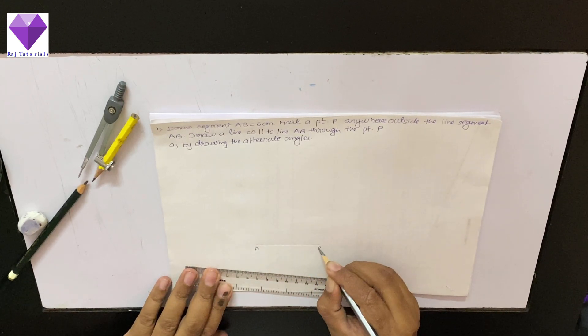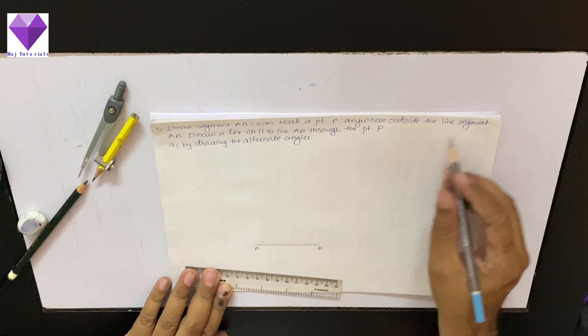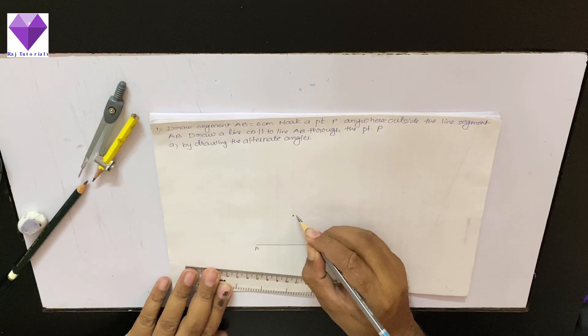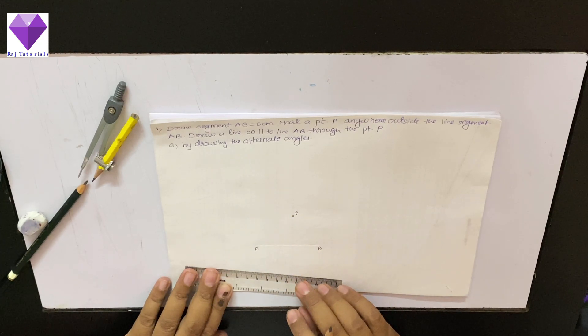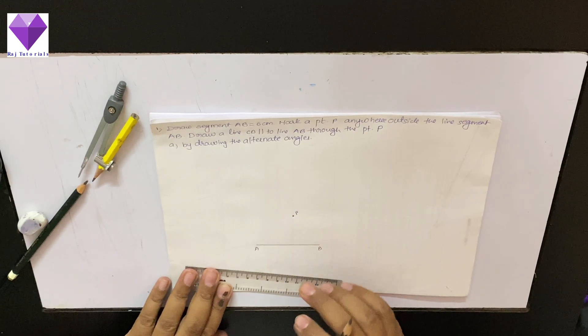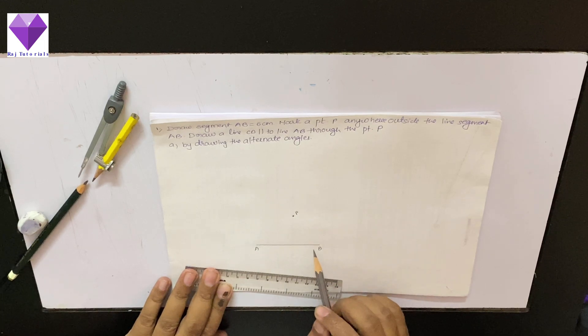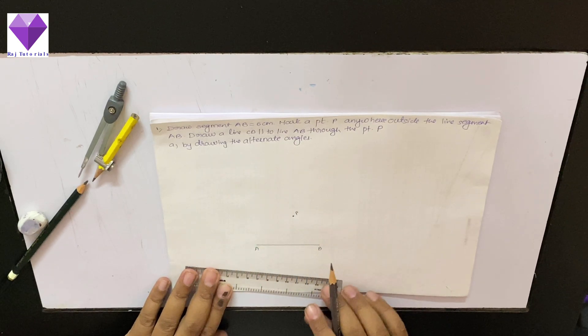Now then he has said mark a point P anywhere outside the line segment AB, so I have marked a point P and now through this point I want to draw a line parallel to AB by drawing the alternate angle.